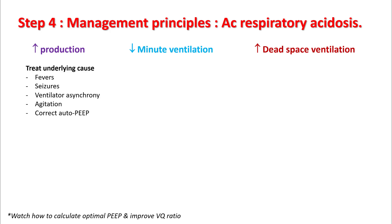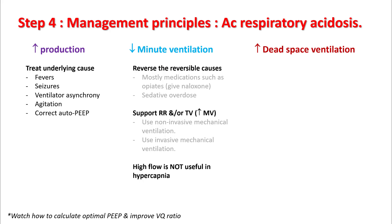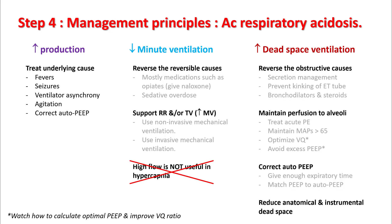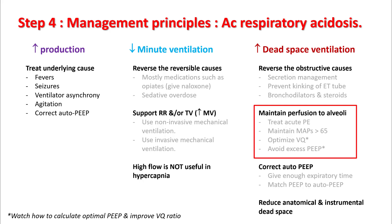For patients with increased production, treat the underlying cause: treat fevers, seizures, agitation, vent asynchrony, and correct their auto-PEEP. Patients with decreased minute ventilation need to improve their minute ventilation — this can be done by reversing reversible causes, for example, if the patient is receiving opiates or sedatives, you can certainly reverse them; or you can use mechanical ventilation support to increase respiratory rate and/or tidal volume. Understand that high flow is not useful in treating hypercapnia in these patients. For patients with increased dead space ventilation, reverse the obstructive causes, maintain perfusion to the alveoli, correct auto-PEEP, and reduce anatomical and instrumental dead space.